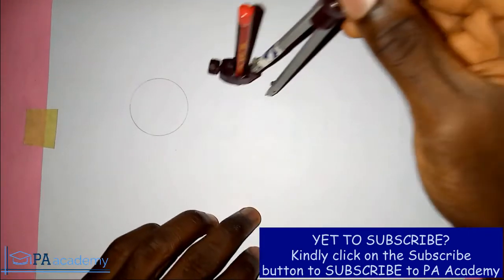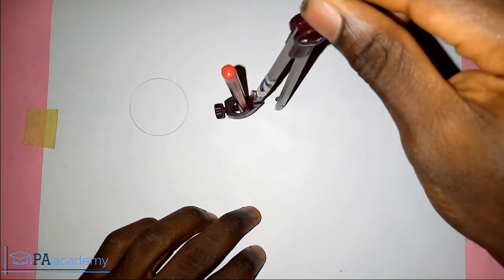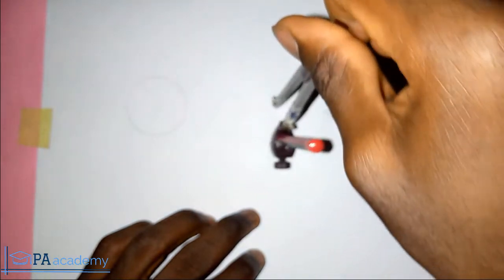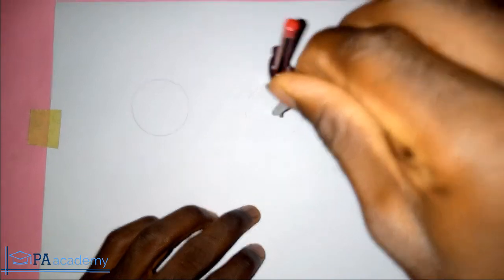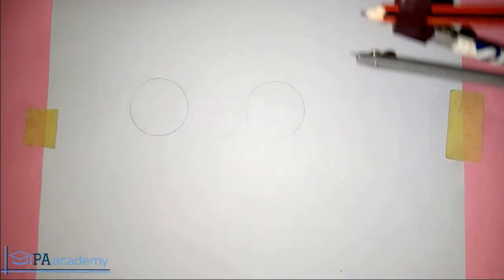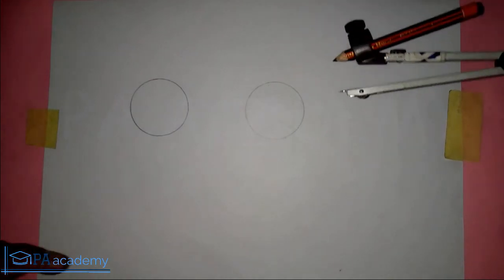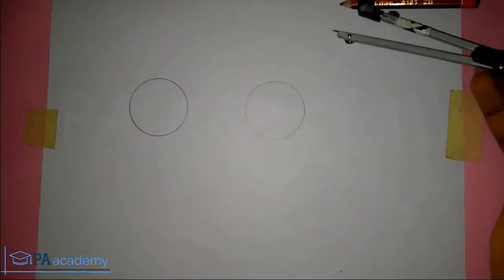So here we have the first circle and let me draw the second circle. You can see they are both the same, the circles have the same radius. So what we are going to do now...